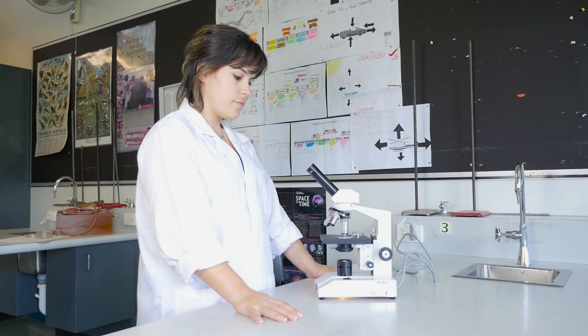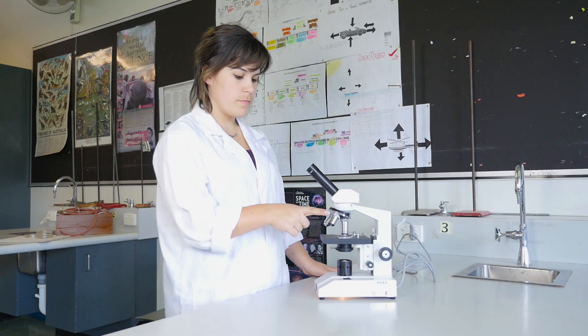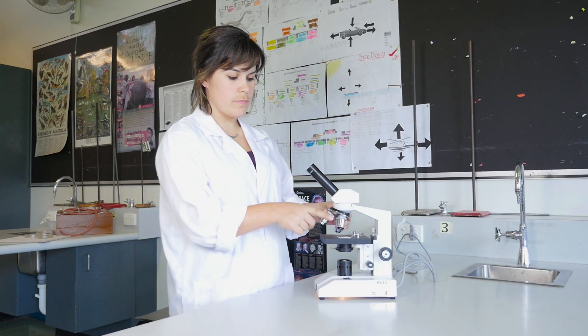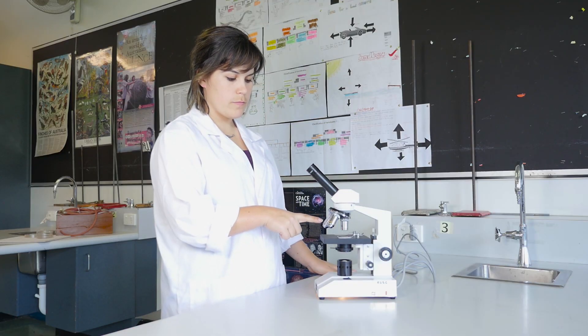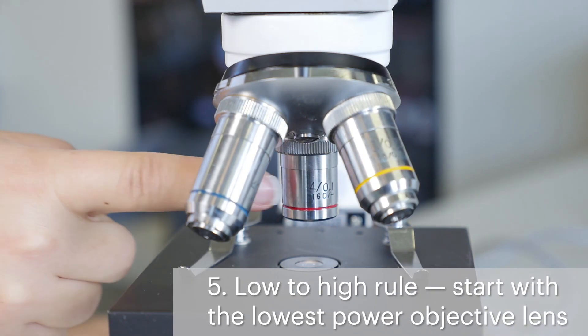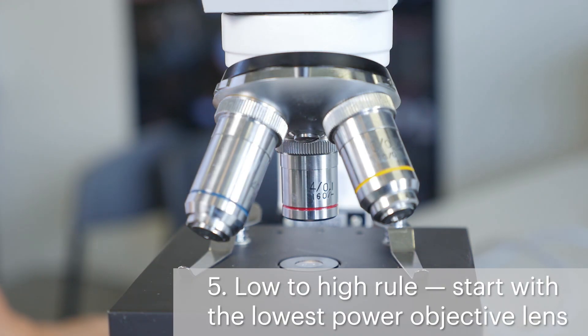Every time you use the microscope, always follow the low to high rule. Start by selecting the lowest power objective lens and later zoom in by working your way up. The lowest power objective lens is the smallest objective lens and is usually marked with a 4.